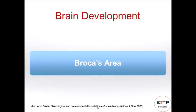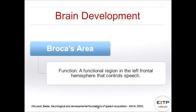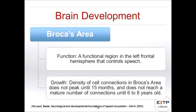Broca's area is specific to speech production. Located in the left frontal hemisphere, it controls speech — and just knowing where speech is controlled may make sense especially for children with underlying medical issues. The growth and density of cell connections in Broca's area is not peaking until 15 months of age, so think about that in relation to speech development and production.